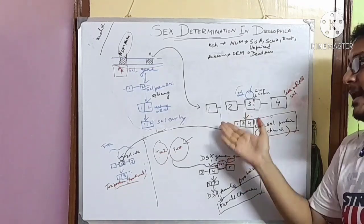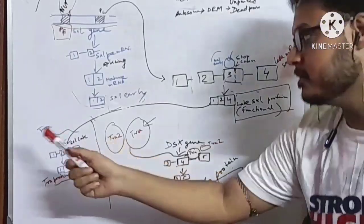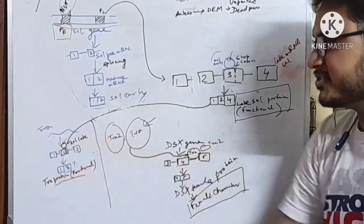So, what happens next? Again, the important thing is TRA. TRA produces, the product of TRA has three exons, one, two, three.